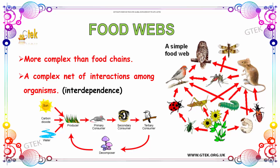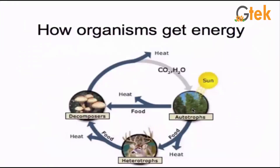Each and every one is interdependent here. Let us see how organisms get energy. You can see the sun gives energy to the autotrophs, and from the autotrophs the food and heat are transferred to the heterotrophs.